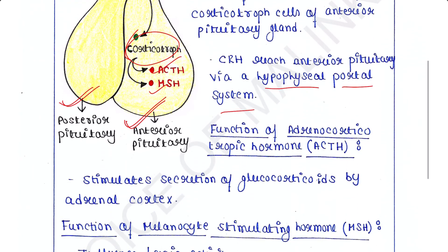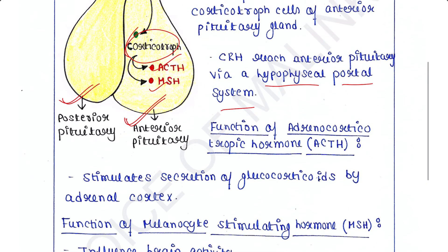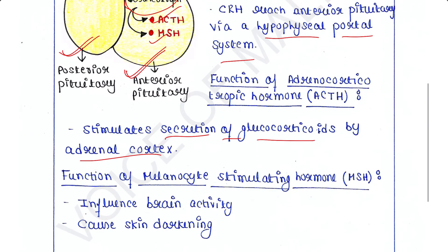Functions of ACTH: ACTH stimulates secretion of glucocorticoids by the adrenal cortex. Function of MSH: the exact role of MSH in humans is unknown, but it may influence brain activity. When this hormone is present in excess, it can cause skin darkening.